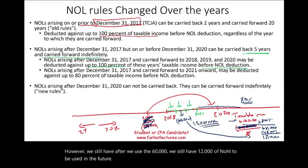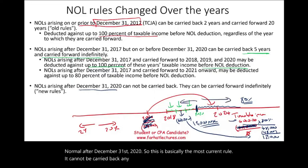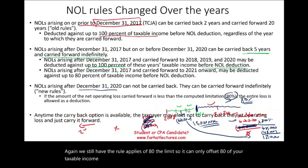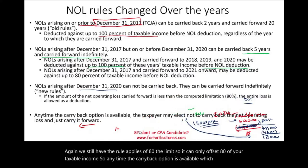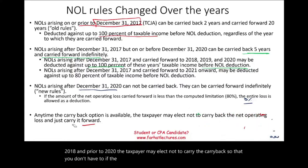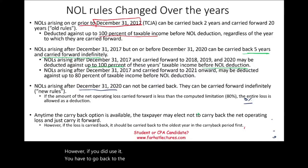For NOL arising after December 31st, 2020 — the most current rule — it cannot be carried back anymore, but it can be carried forward indefinitely. The 80% limitation still applies, so it can only offset 80% of your taxable income. Whenever the carryback option is available — prior to 2018 or from 2018 to 2020 — the taxpayer may elect not to use it. However, if you do use it, you must go back to the oldest year first.